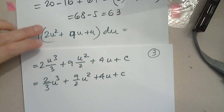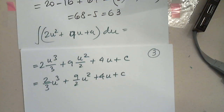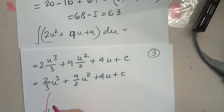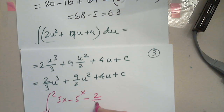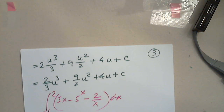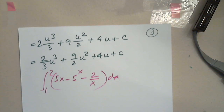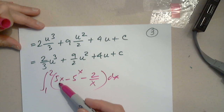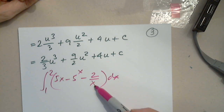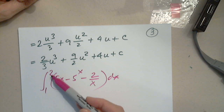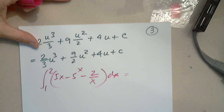You can always go back and differentiate this to make sure you get the original. Now the next one is a definite integral, so I need to make sure the function is continuous on the interval 1 to 2. The polynomial piece is always continuous, the exponential piece is always continuous, and the 1/x piece is not continuous at 0, but 0 is not in this interval, so everything is safe.